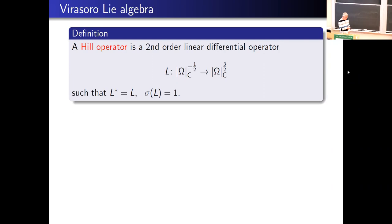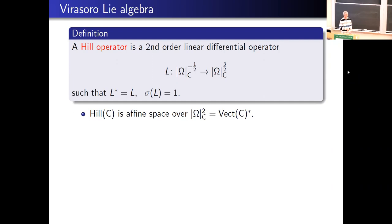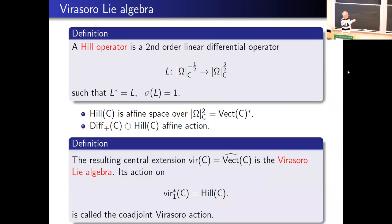The space of Hill operators is indeed an affine space over quadratic differentials — if you have a Hill operator and add multiplication by a quadratic differential, you get another Hill operator. Diffeomorphisms of the circle act on this space with an affine action, and the underlying linear action is the coadjoint action. So we are in business and we get a central extension, which is the Virasoro Lie algebra — that's the coordinate-free way of defining it.